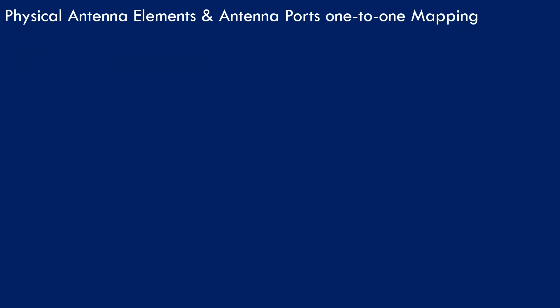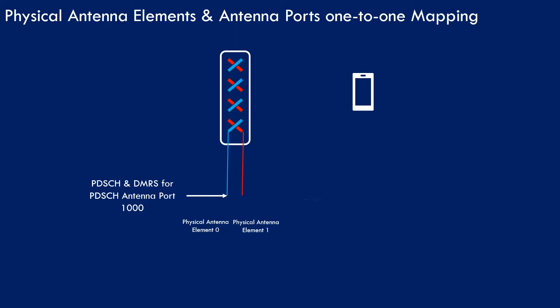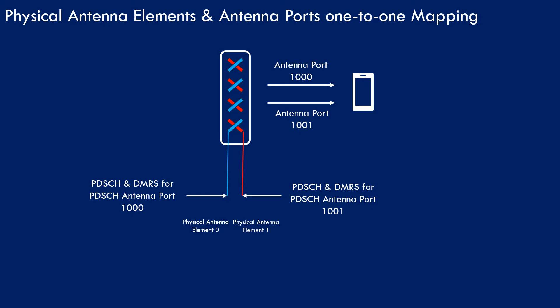In a one-to-one mapping example with a single cross-polar (2×2 MIMO) antenna, physical antenna element 0 is mapped with PDSCH and DMRS for PDSCH antenna port 1000, and physical antenna element 1 is mapped with PDSCH and DMRS for PDSCH antenna port 1001. The UE receives two downlink transmissions — one PDSCH and its DMRS associated with antenna port 1000, and another associated with antenna port 1001.